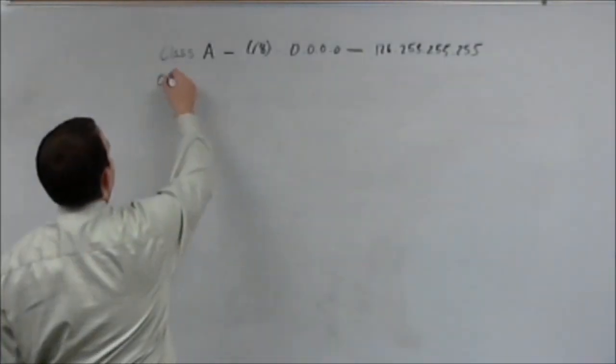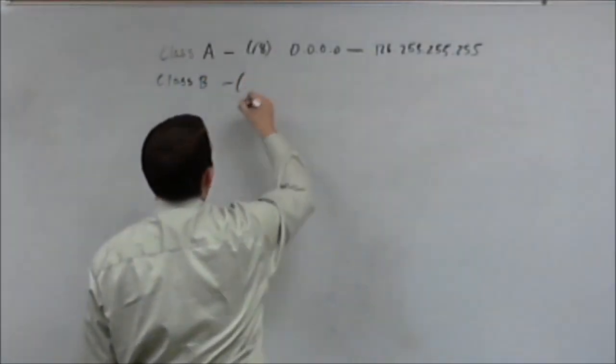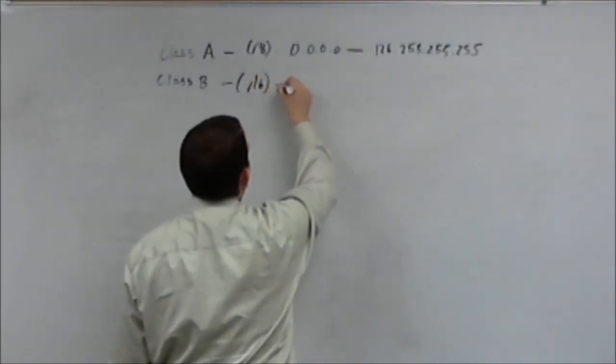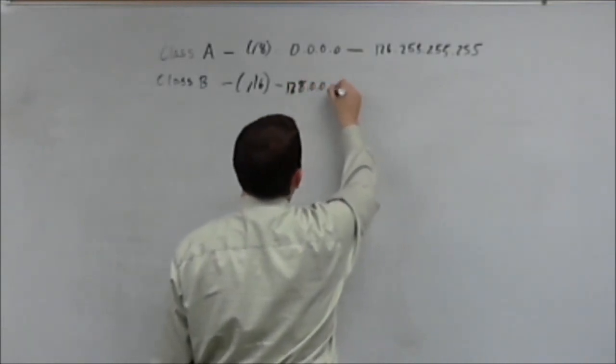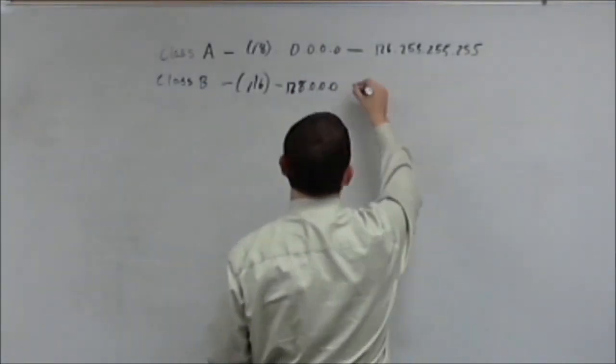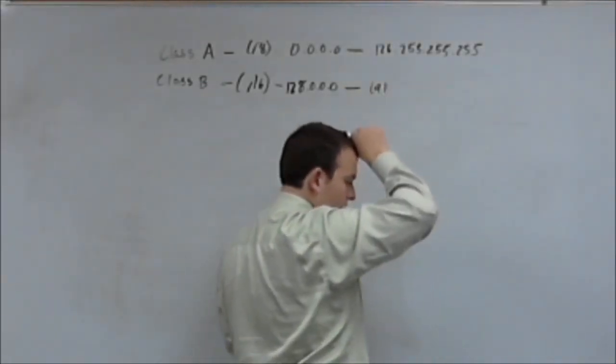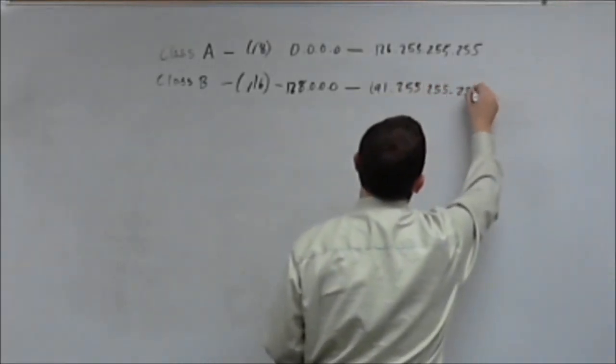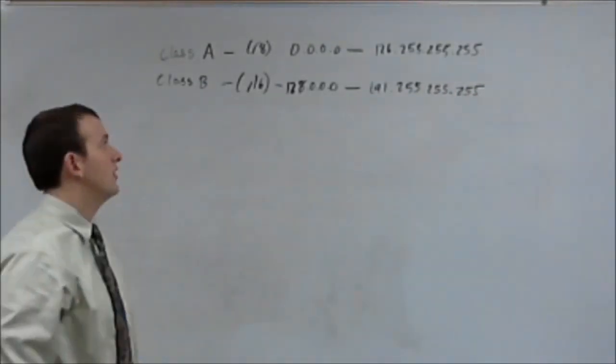The next class is class B. Class B, by default, will always use a slash 16 subnet mask. And it starts at 128.0.0.0, and it goes all the way up to 191.255.255.255. So that's your class B IP address range.